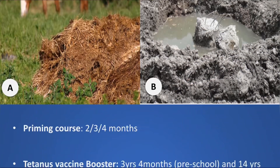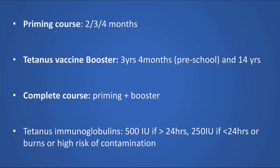Regarding vaccination status: the tetanus schedule is a priming course received at two, three, and four months of age, then a booster at three years and at fourteen years — though this dose is often skipped. A vaccine protects for up to ten years. So a patient who received their last vaccine at three years and completed the priming course is protected for up to thirteen years. Most children who are properly vaccinated do not need vaccination or immunoglobulin, even for tetanus-prone or high-risk wounds.